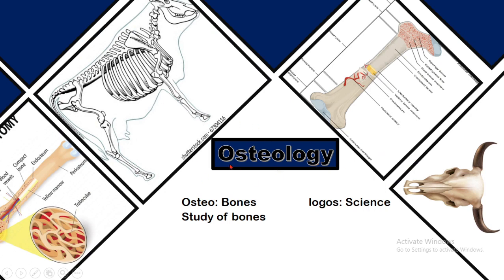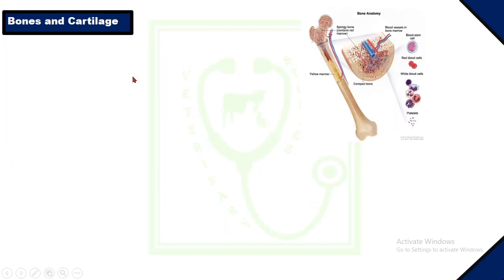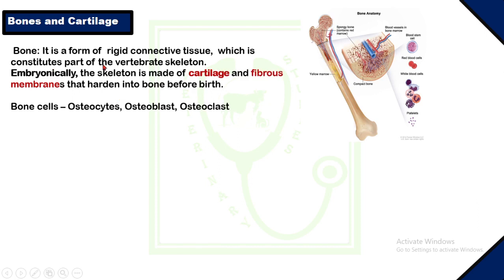Osteology: the word is composed of two words — 'osteo' means bones and 'logos' means science — so it is the scientific study of bones in all aspects. Bone is a form of rigid connective tissue that constitutes part of the vertebrate skeleton. Vertebrates are animals having a vertebral column or backbone. In embryonic life, the skeleton is made up of cartilage and fibrous membranes which harden into bone before birth. The cells found in bones are osteocytes, osteoblasts, and osteoclasts.